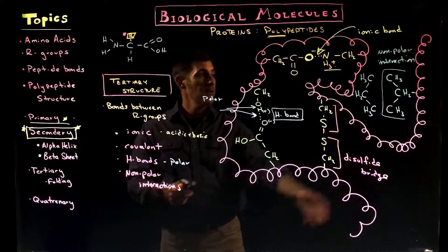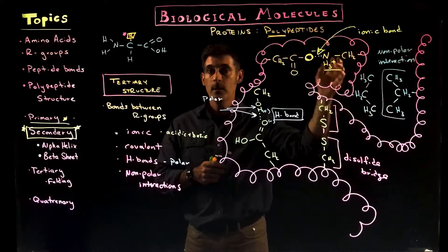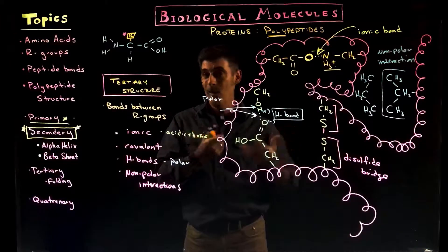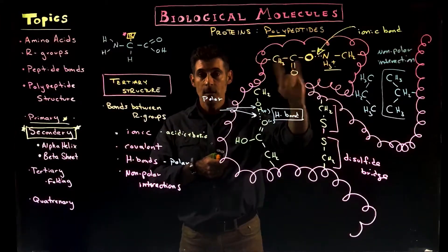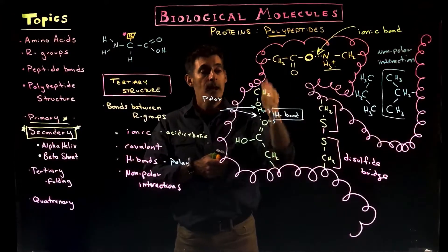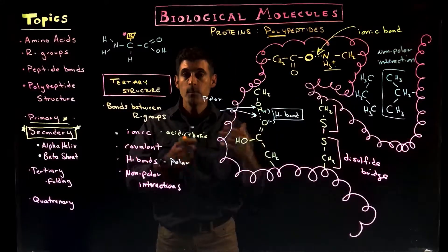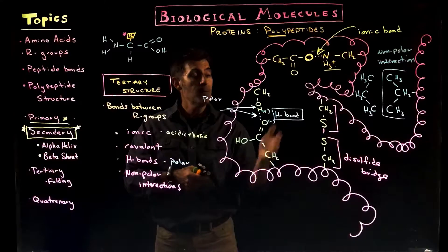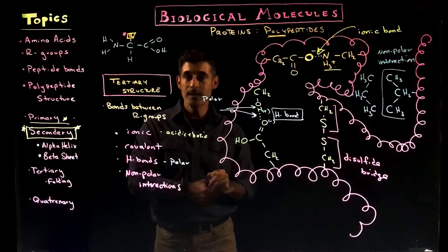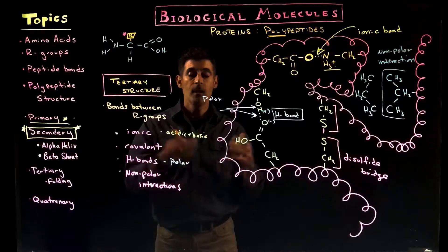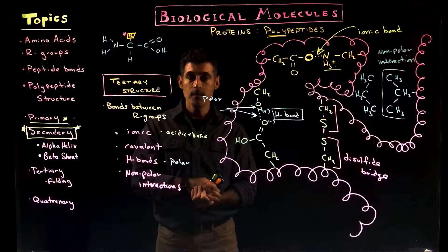So we have the nonpolar interactions between the nonpolar R groups, just kind of together almost by default in a way. We have the ionic bonds between the charged R groups. We have hydrogen bonds between polar R groups, and then we can have covalent bonds as well. And the covalent bonds, particularly these disulfide bridges, are going to be the strongest, most stabilizing force.